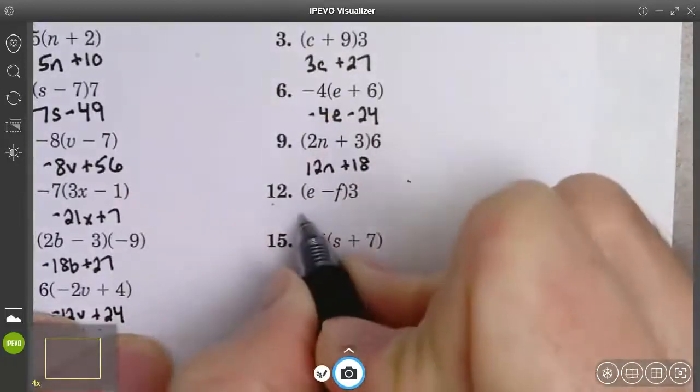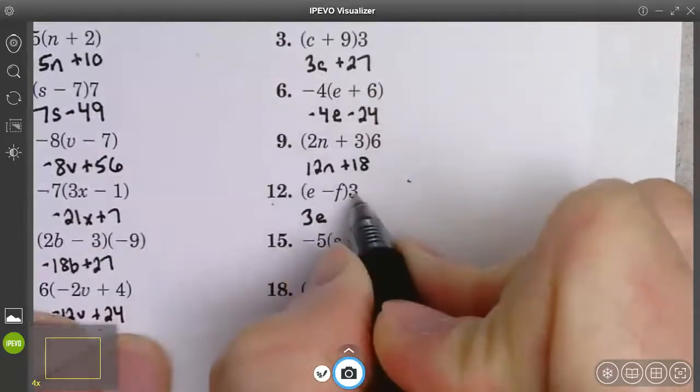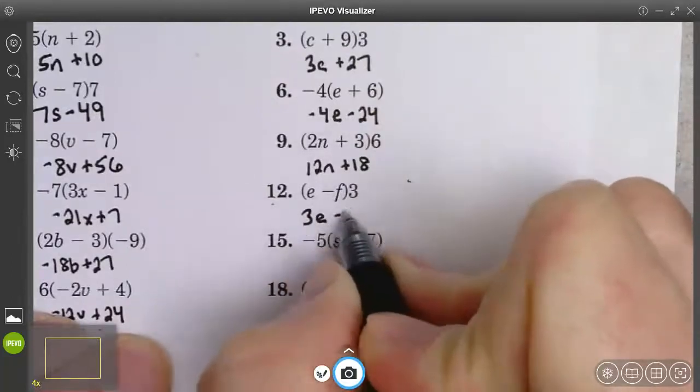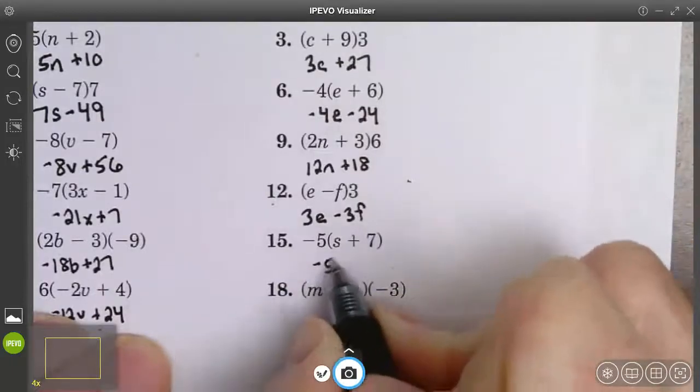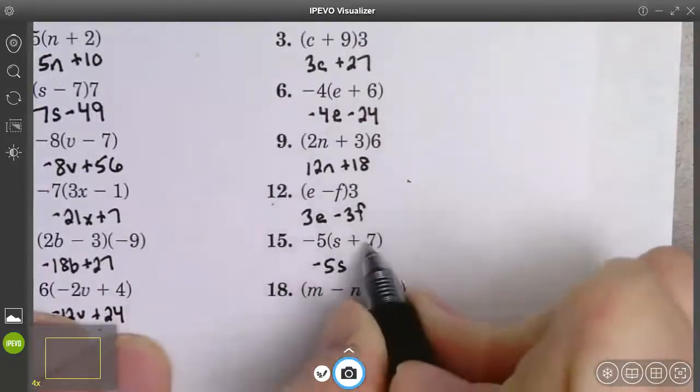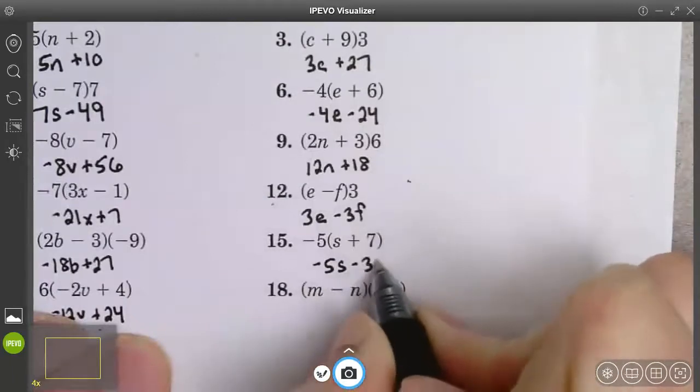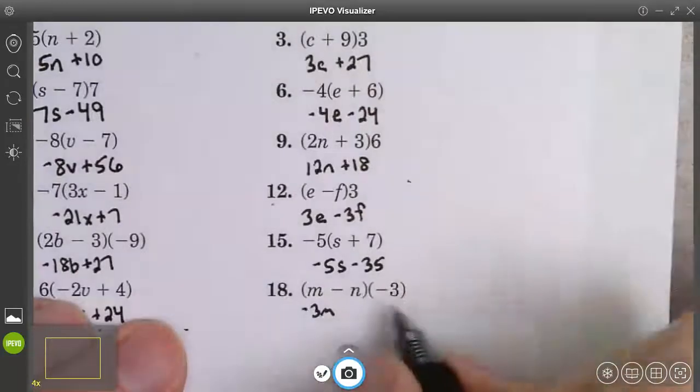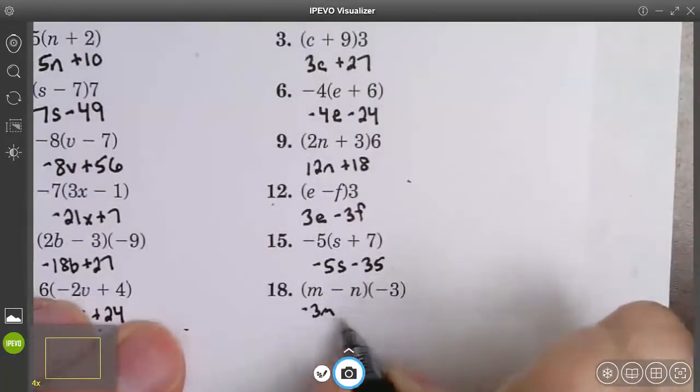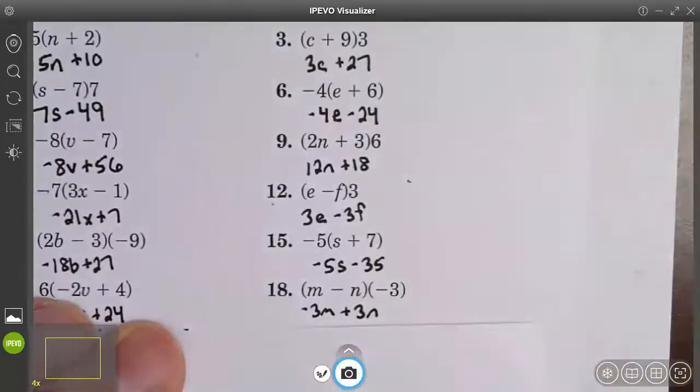3 times e is 3e. 3 times negative 1f is negative 3f. Negative 5 times s is negative 5s. Negative 5 times 7 is negative 35. These are already alphabetical. Negative 3 times m is negative 3m. Negative 3 times negative n. Same sign, positive 3n. We have simplified those expressions. Thank you.